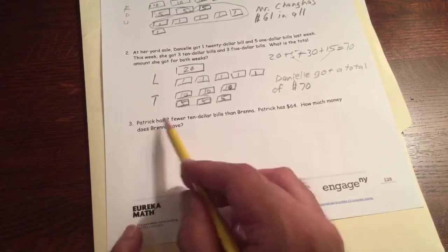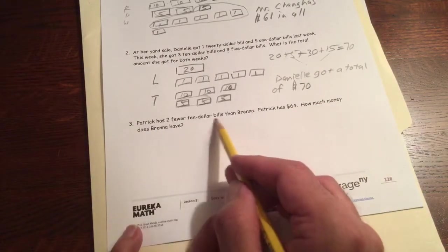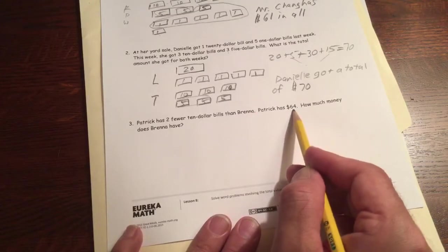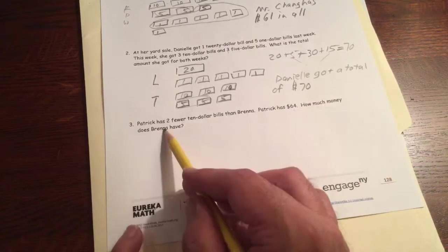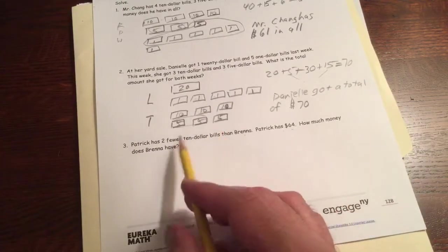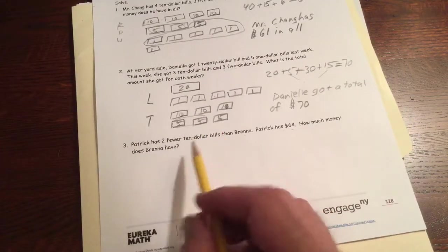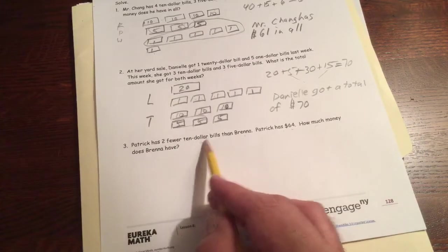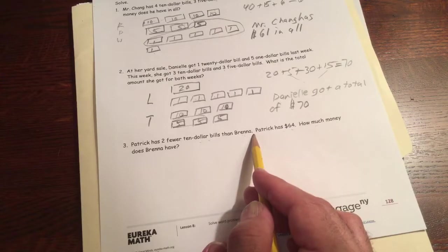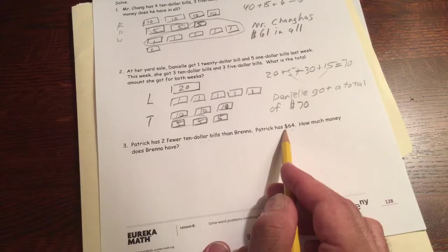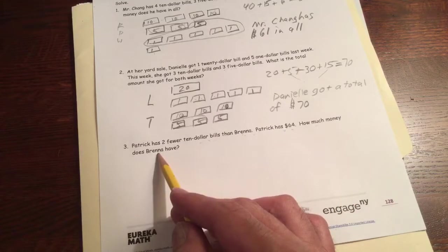Patrick has two fewer $10 bills than Brenna. Patrick has $64. How much money does Brenna have? All right, well, this could be a pretty good one for a tape diagram.